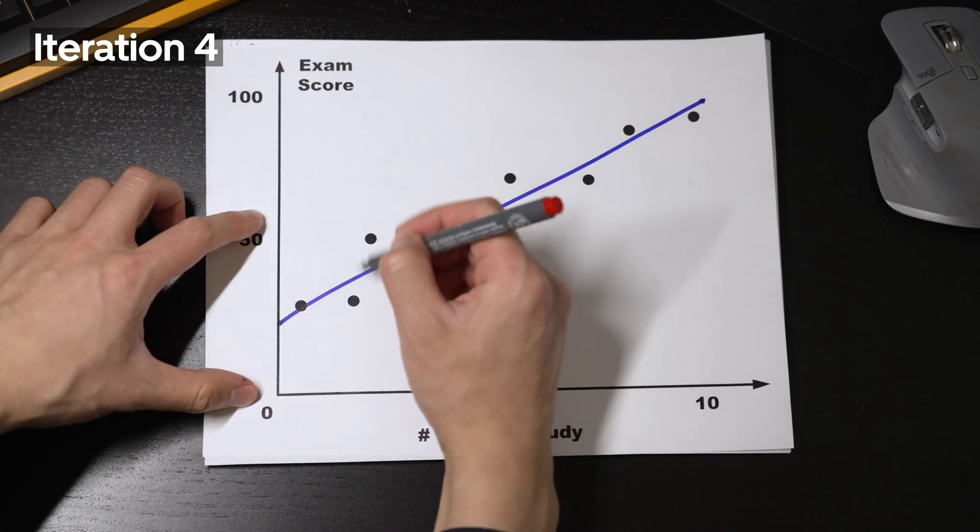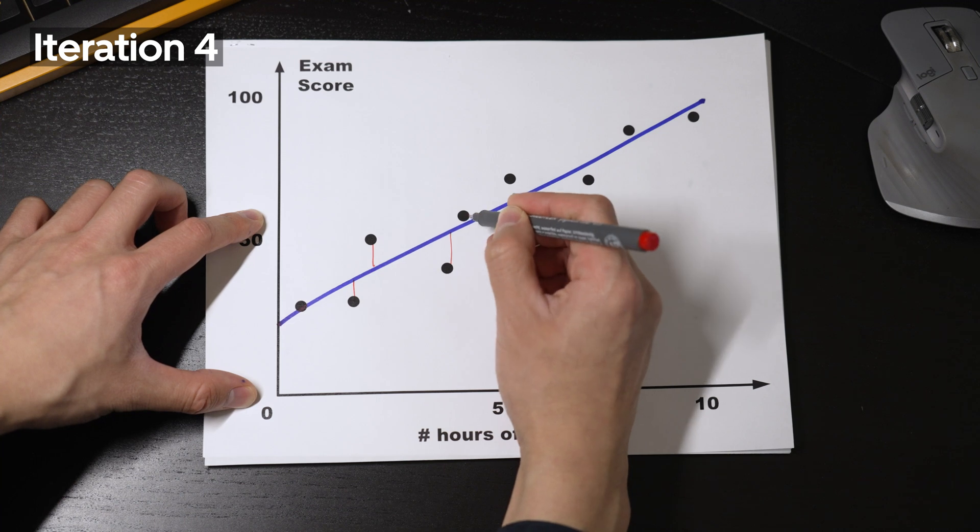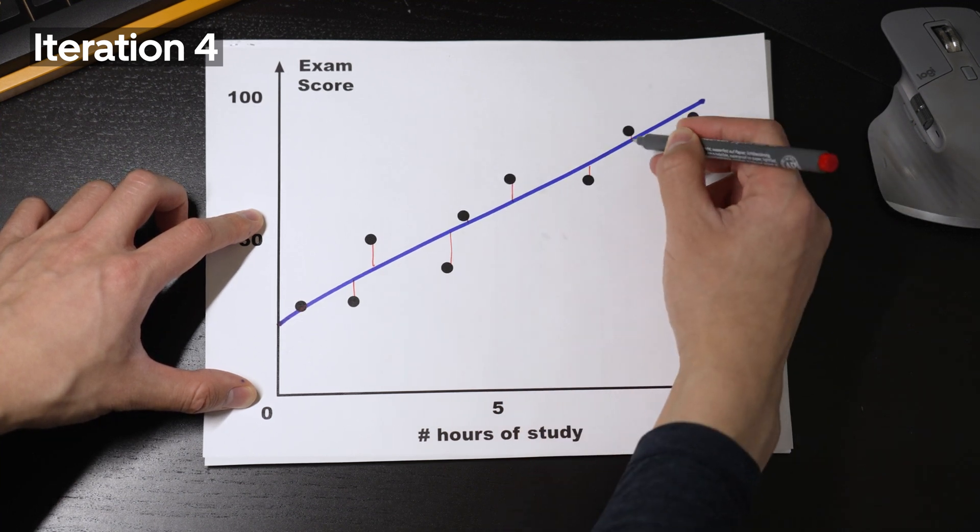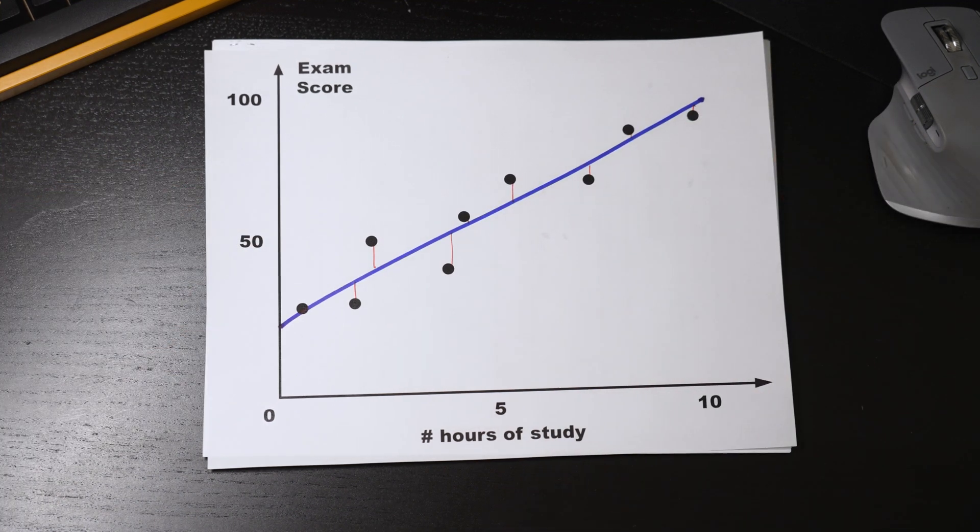Seems like a lot of work, but a program can do it pretty fast. Once it feels like it can't improve any further, that's the model it outputs. Beautiful. Linear regressions are extremely simple but extremely powerful.